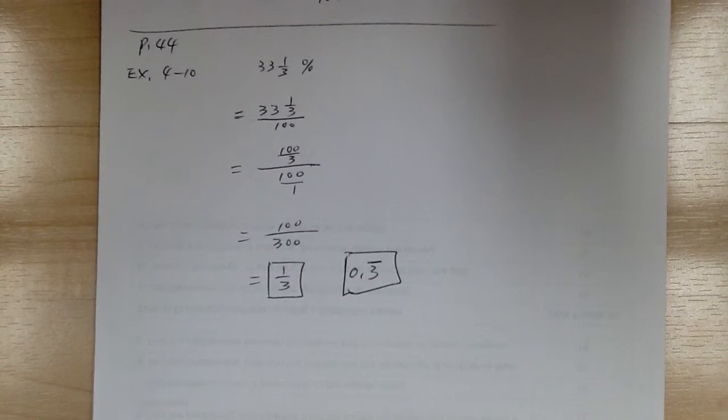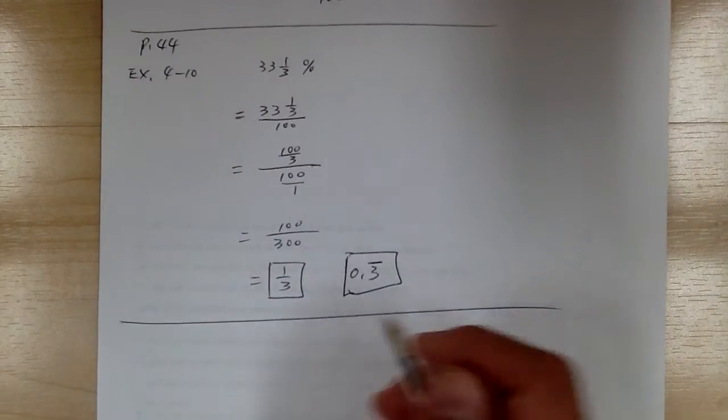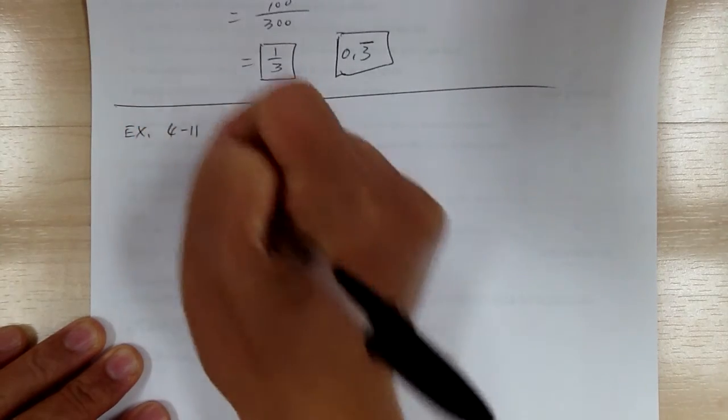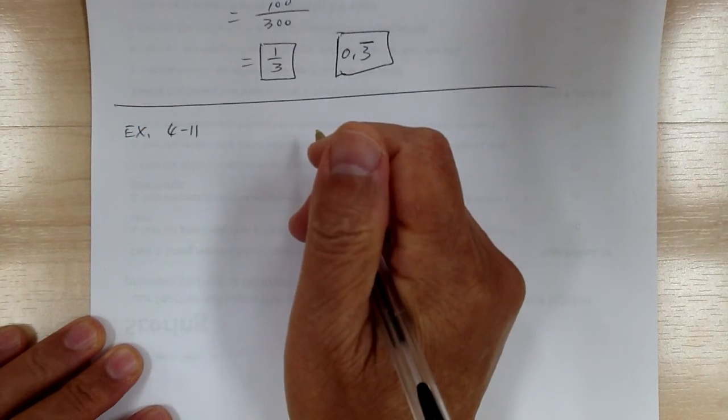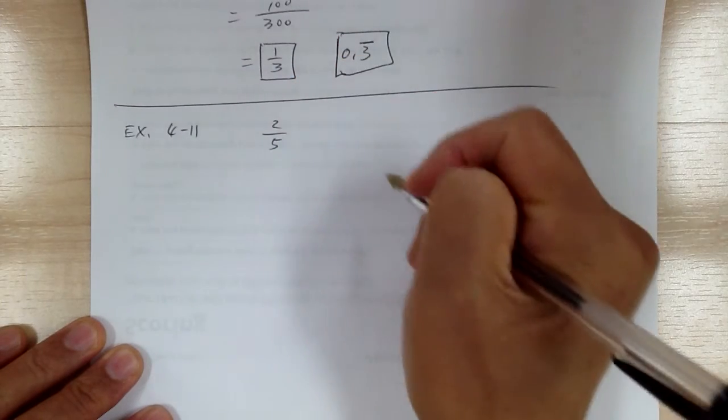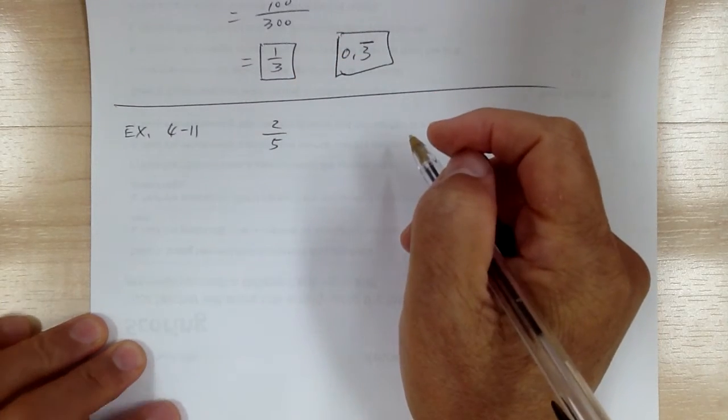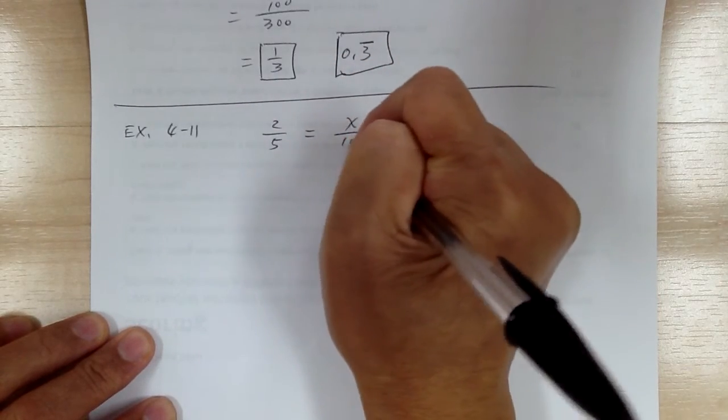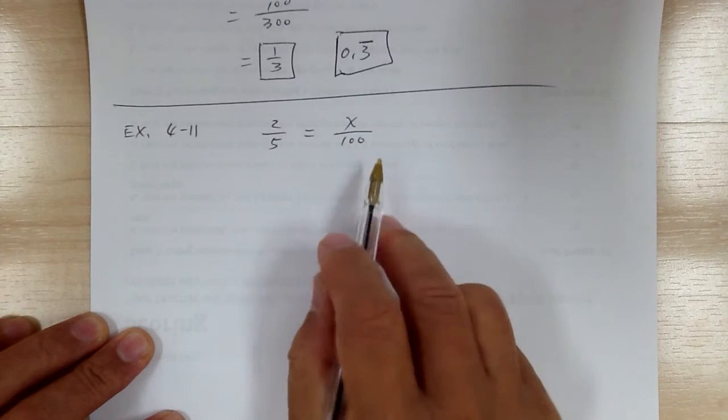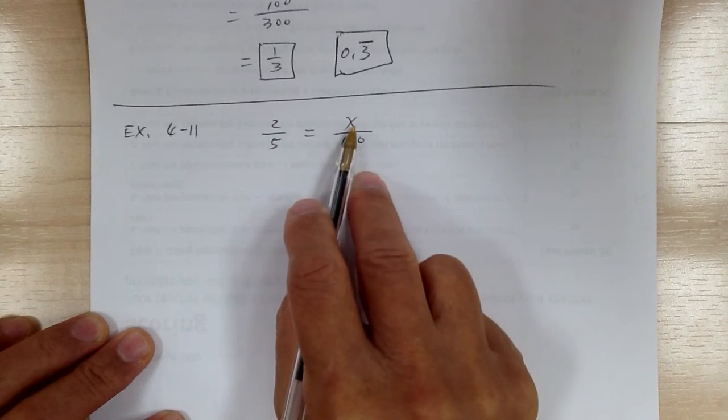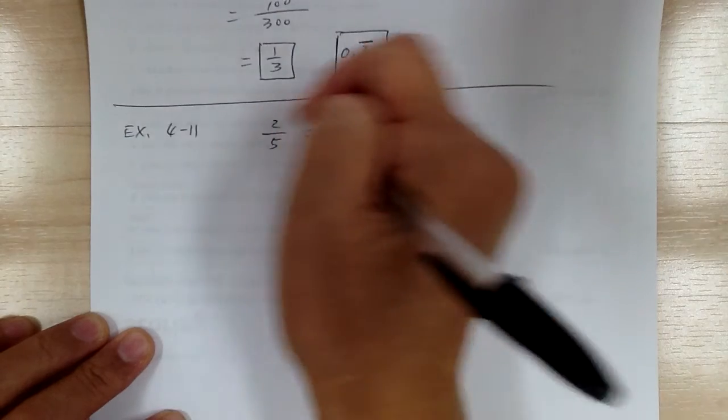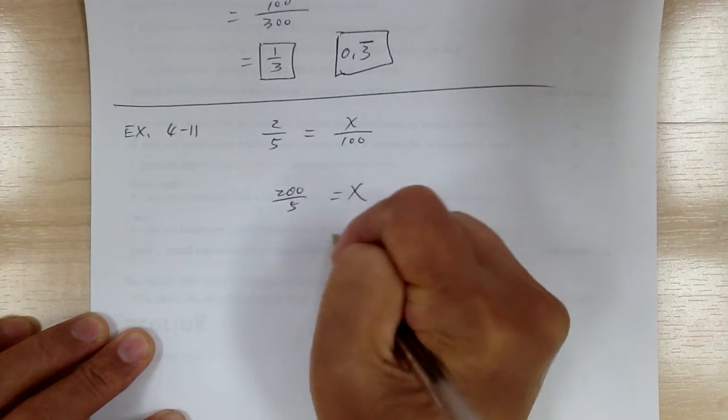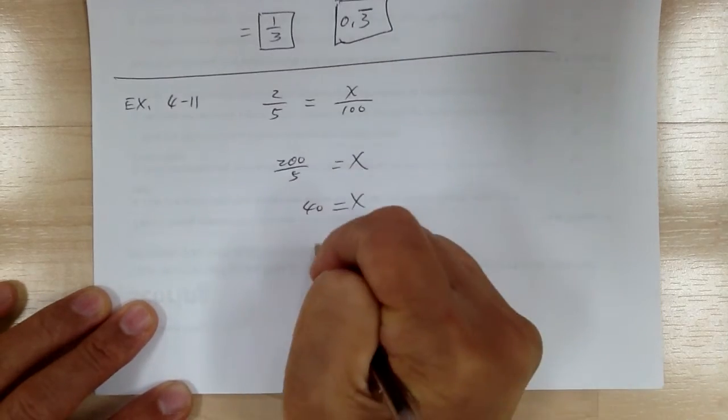Let's go to example 4-11. So you should write 2 over 5 as percent. So what you want to do is you want to figure out what is equal to x over 100. That's what you try to figure out. Again, percent means over 100. So to figure out the x, cross-multiply or just multiply both sides by 100. So x equal to 200 over 5. So x equal to 40. So that means this is equal to 40%.